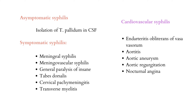We can also find meningovascular syphilis, which occurs at around 5 years, where we find inflammation of the pia mater and arachnoid membrane with involvement of arteries.